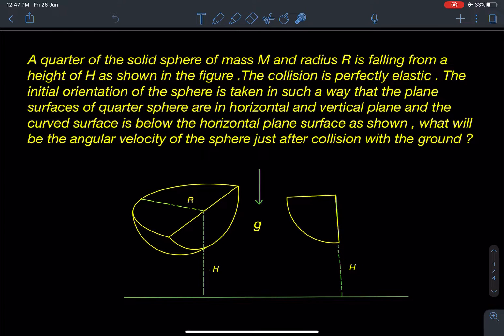The initial orientation of the sphere is taken in such a way that the plane surfaces of quarter sphere are in horizontal and vertical planes and the curved surface is below the horizontal plane surface as shown. We can refer this diagram and its side view is also given here. In this orientation we are going to release this sphere from a height h. What will be the angular velocity of the sphere just after collision?